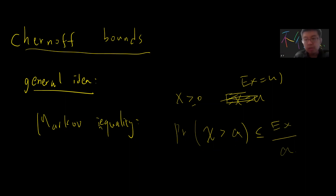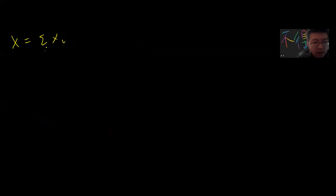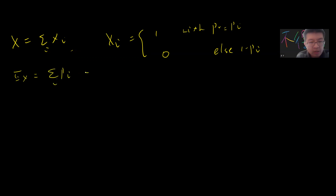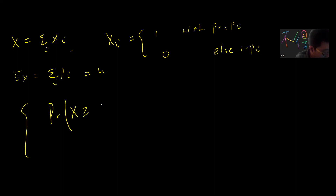What I want to talk about with the simplest Chernoff bound is this setting: you define X to be the summation of xi, and each xi is Bernoulli. So xi is 1 with probability pi, and 0 with probability 1 minus pi. So the expectation of X will be just the sum over pi. Due to the law of large numbers, you suspect that the probability that X is greater or equal to (1 + δ)μ should be bounded — and each xi is independent.